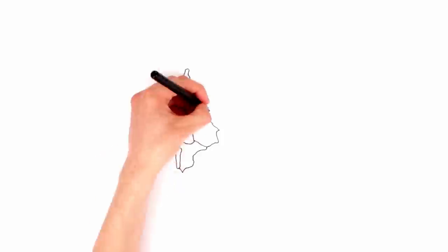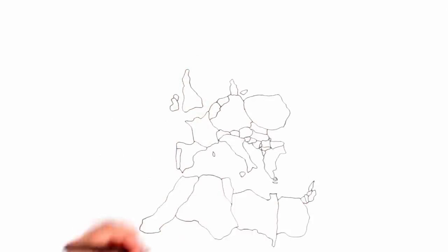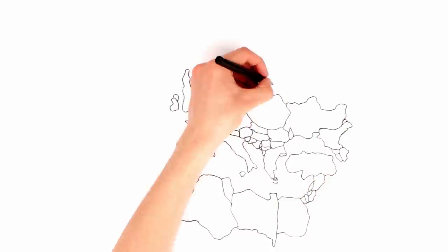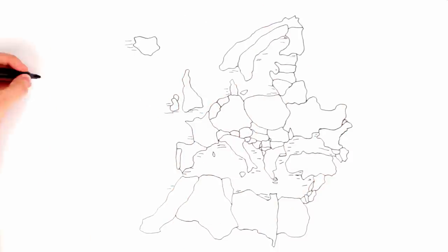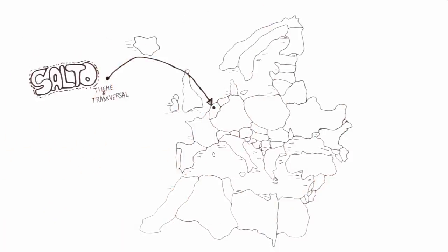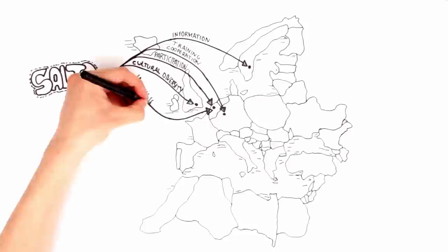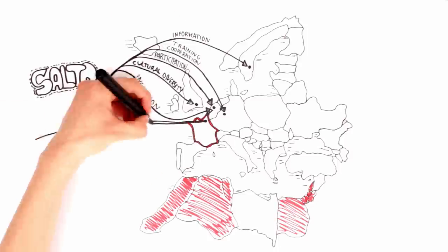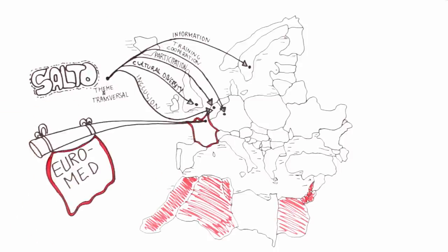The SALTO Youth Network aims to support Erasmus Plus Youth in Action projects in priority areas such as participation, European citizenship, and cultural diversity and inclusion of young people with fewer opportunities.